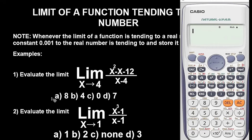Let's solve example two together. Example two says: evaluate the limit as x tends to 1, where the numerator is x squared minus 1 and the denominator is x minus 1. We are going to clear the calculator because we need to store a new value.